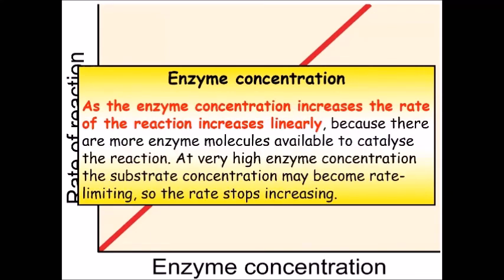So the bit in red is the really important bit. That's a good sort of key point to say in exams, and you can reinforce it with the follow-up bits there. So at very high enzyme concentrations, the substrate may limit the rate.